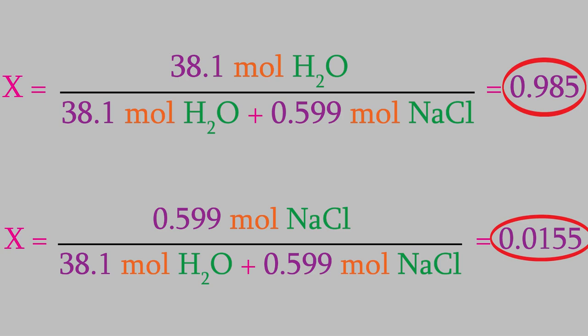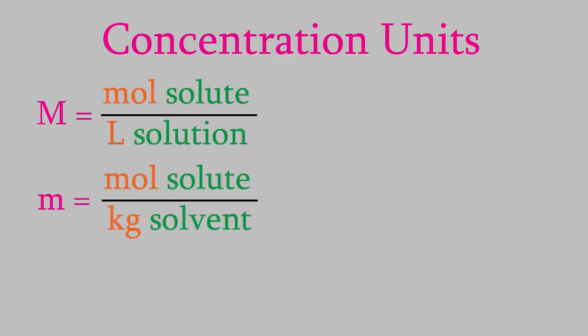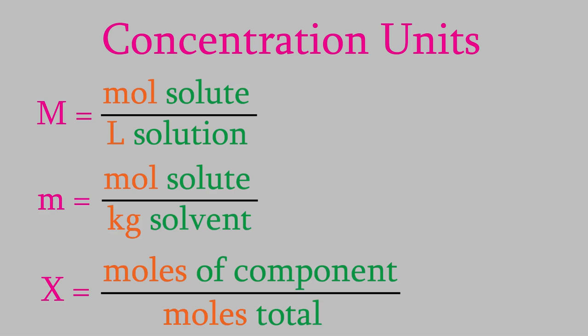Now let's calculate the mole fraction of NaCl. That's 0.599 moles over the sum of the moles of NaCl and water, giving us a mole fraction of 0.0155. Notice that the mole fractions of all the ingredients add up to 1 — the mole fractions for all ingredients in a solution always should total 1.